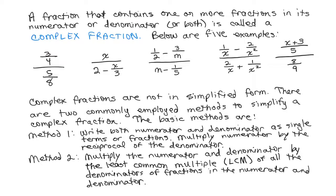You multiply the numerator and denominator of the complex fraction by the least common multiple of all the denominators of fractions in the numerator and denominator. And this eliminates the complex fraction in the first step.